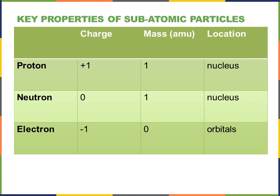Unbalanced atoms are highly reactive. Take sodium, Na+: that means it has one more proton than it does electrons, giving it a positive charge. Look at chloride, Cl-: that means it has one more electron than it has protons, giving it a negative charge.